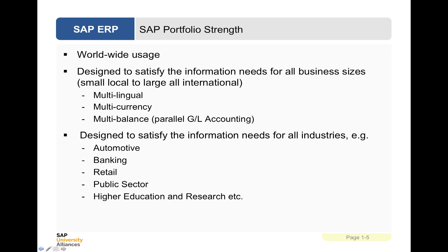SAP is used worldwide, and one of the things that ERP is good at is dealing with multiple languages, multiple currencies, and multiple balances, consolidating those through parallel general ledger accounting. SAP software is also available for specific industries, with modules targeting automotive, banking, retail, the public sector, and even higher education and research, such as the University of Portsmouth.